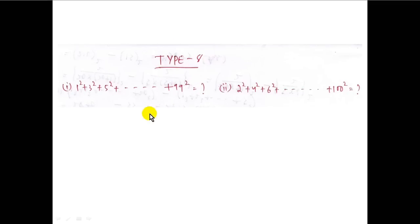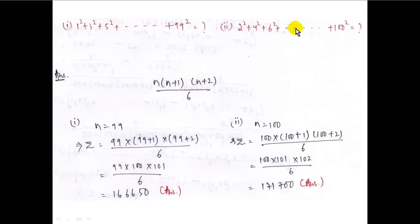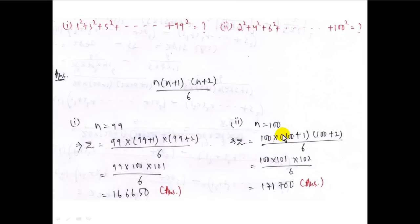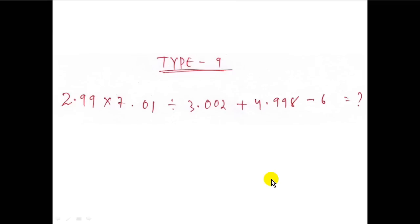Type 8: when the summation of squares of all odd or even numbers is given. The formula for both cases is n(n+1)(n+2) upon 6. For the first case — 1² + 3² + 5² + ... + 99² — n equals 99, giving 99 into 100 into 101 upon 6, which comes to 166650. For the second case with only even numbers, n equals 100, giving 100 into 101 into 102 upon 6, which comes to 171700.